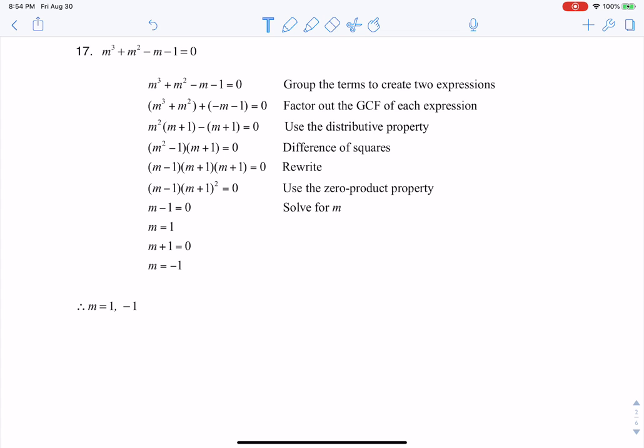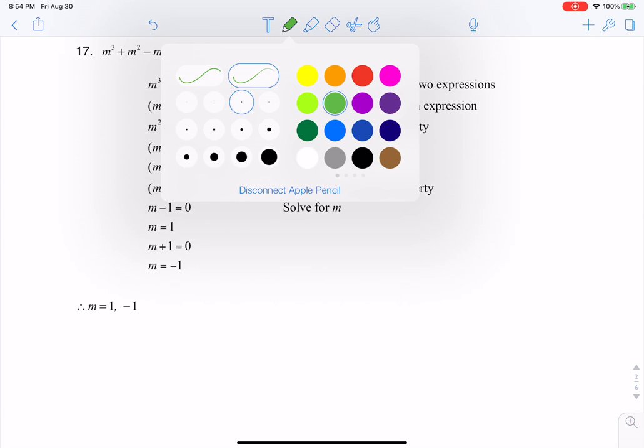The directions for this were to factor by grouping. Anytime I want to factor by grouping, I typically start with grouping the first two and the last two.